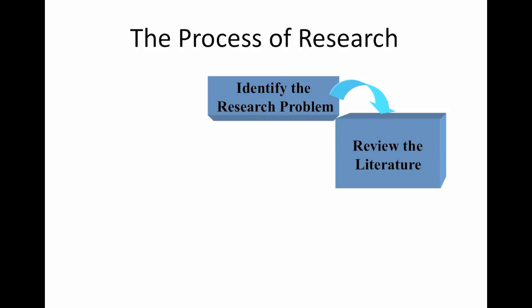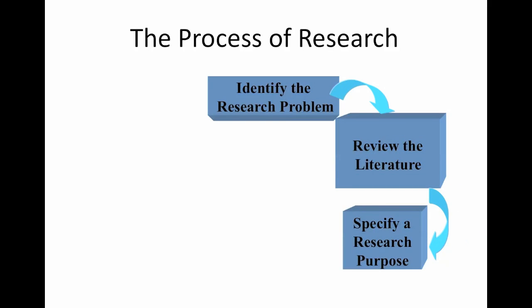Literature might be journal articles or a dissertation, but we're talking about peer-reviewed literature. Then, once the literature is reviewed, one would determine what is the research purpose. It might be that the literature indicated that the purpose was not really needed, or the review of the literature caused the purpose to stand out and caused the study to narrow some.